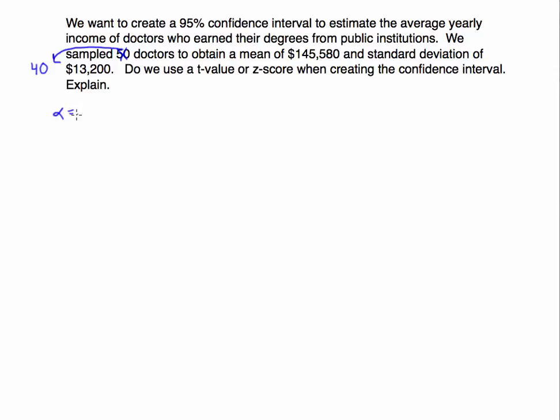You're looking at a significance level of 0.05. If we're taking a confidence level of 95%, the significance is 0.05. When we split that into two pieces for each tail, we get 0.025. The sample mean we obtained was $145,580 and the sample standard deviation was $13,200.